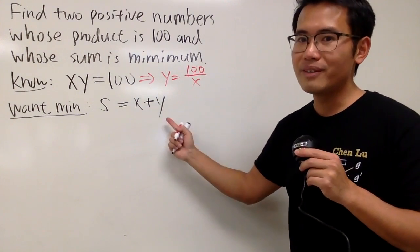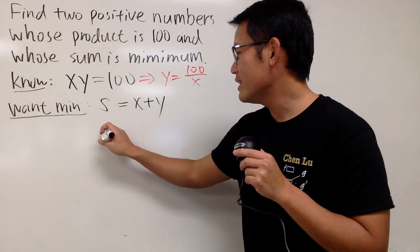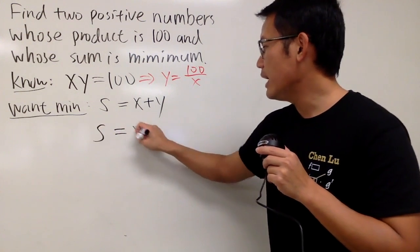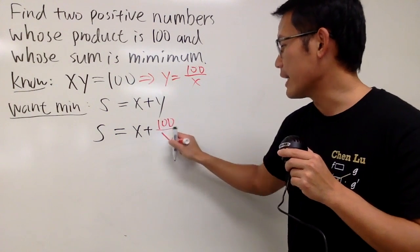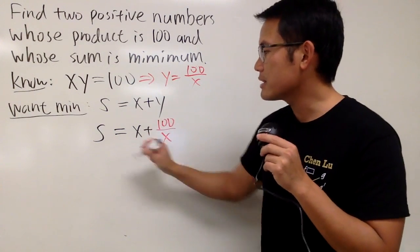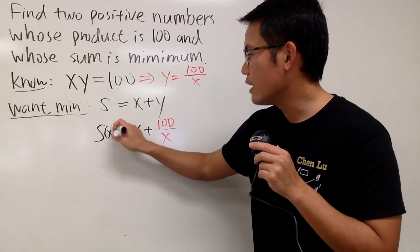And we can put this right here. And that's very lovely. Now we see we have S equals x plus 100 over x, like this. And now we have a function in terms of x. So I can call this to be S of x.